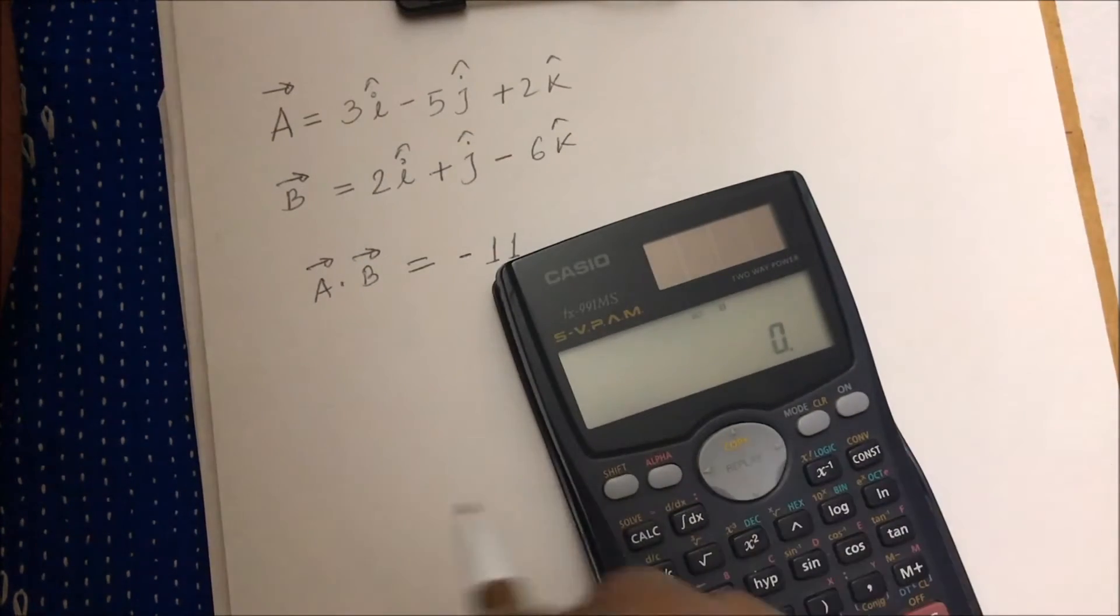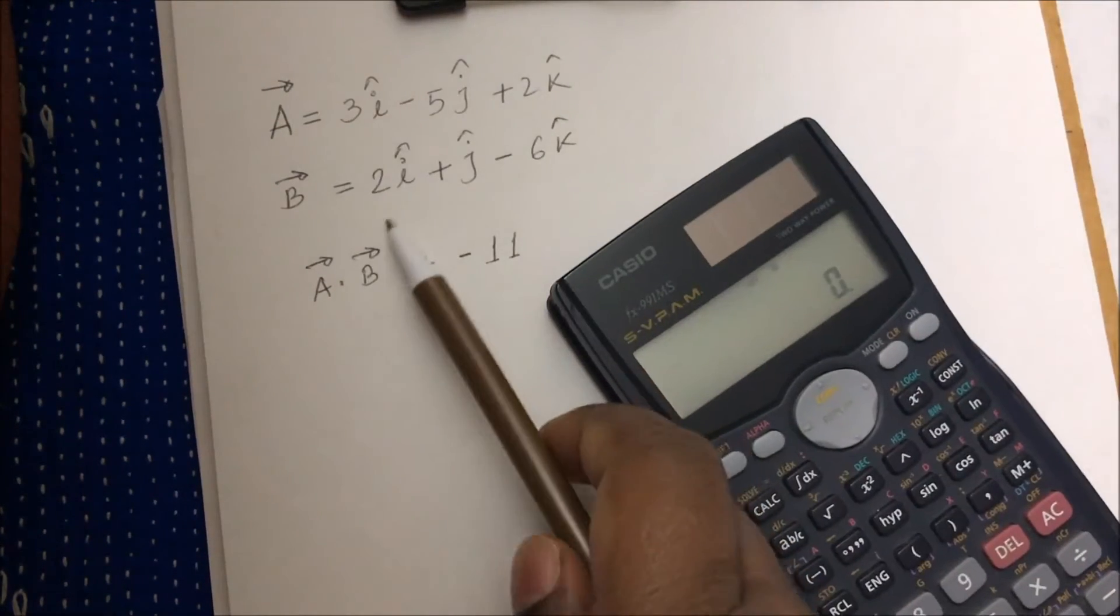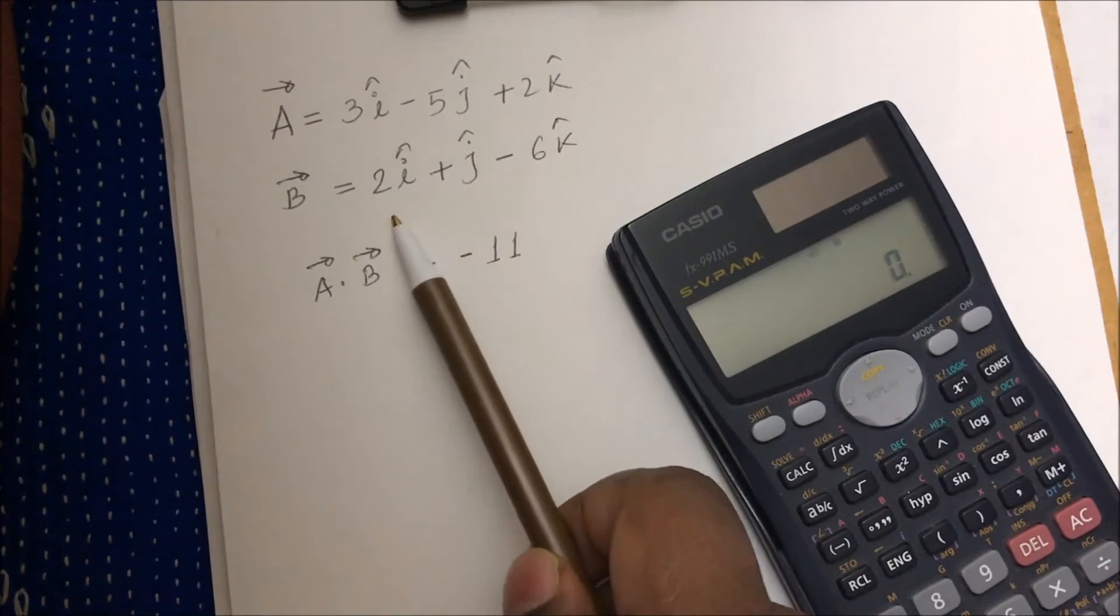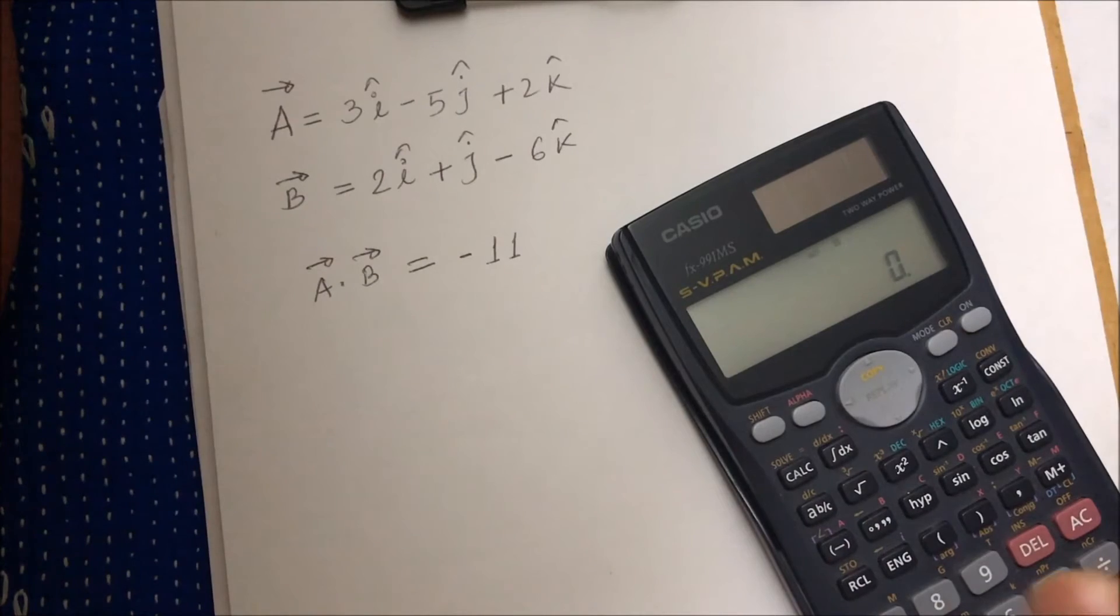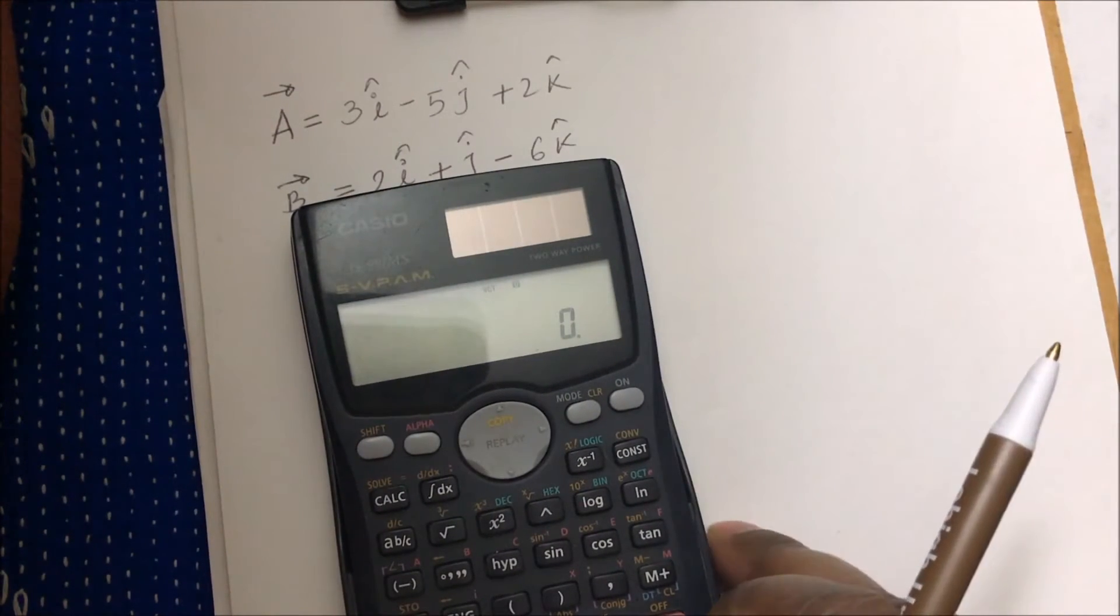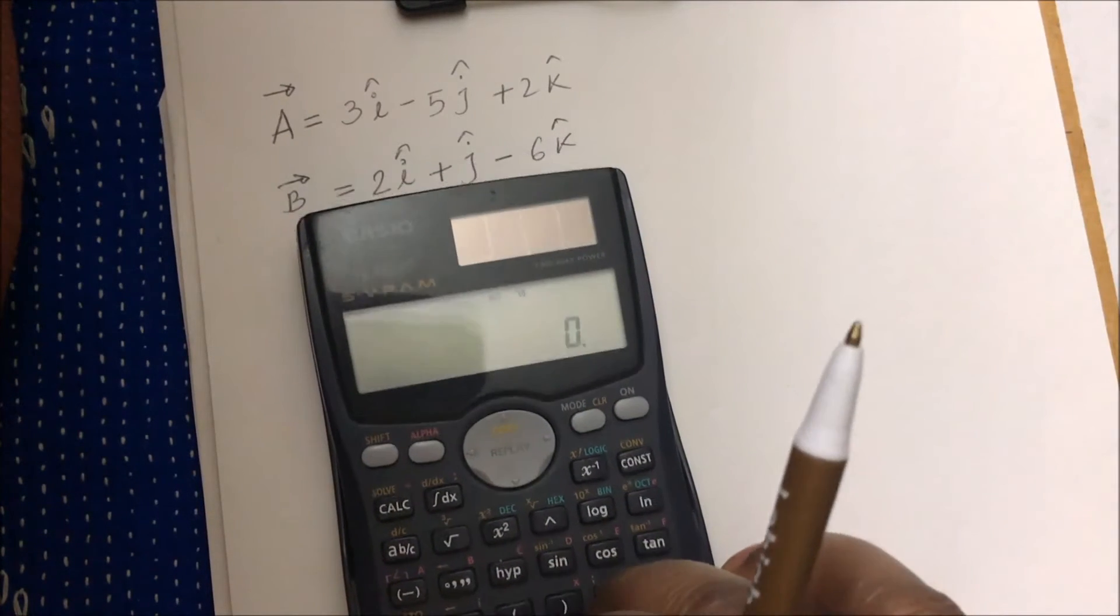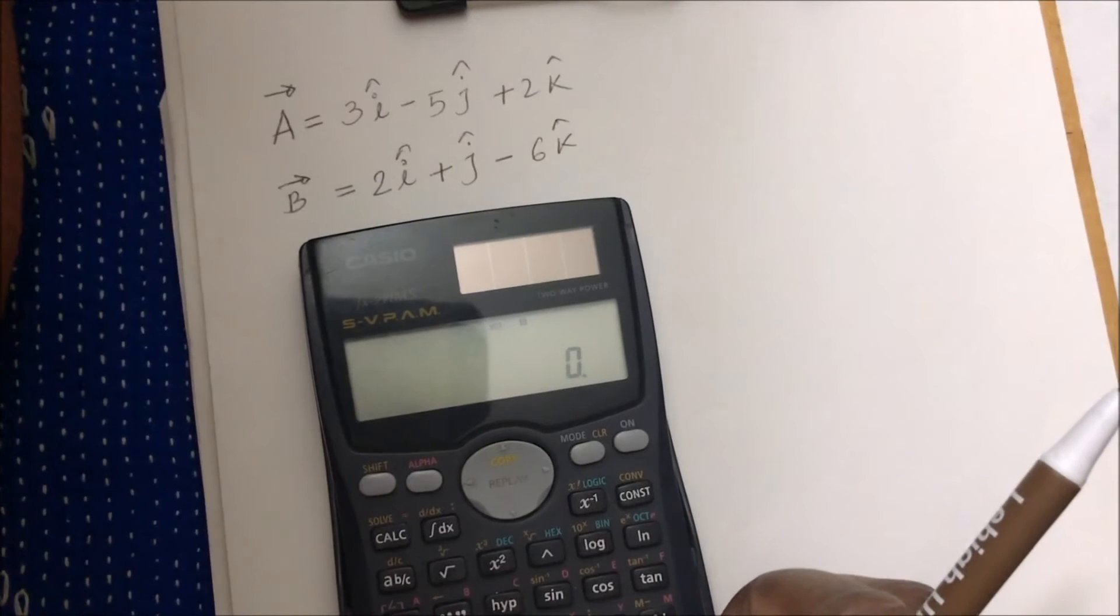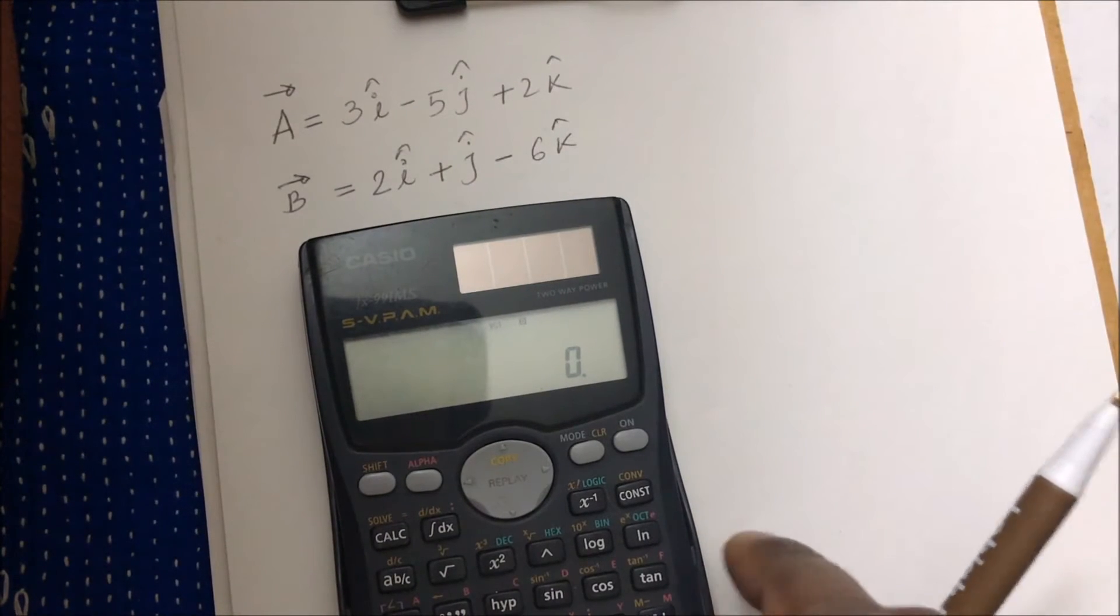Okay, so let's go ahead and start. So I have two vectors here: vector A = 3i - 5j + 2k, and vector B = 2i + j - 6k. So I have to do the multiplications.